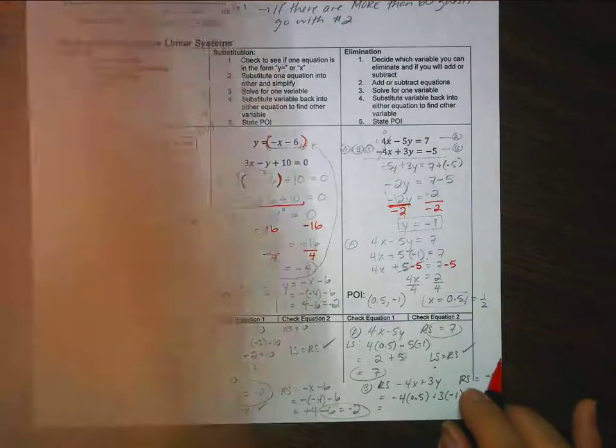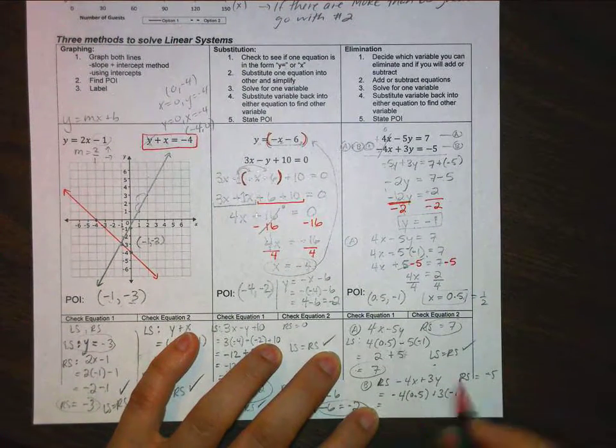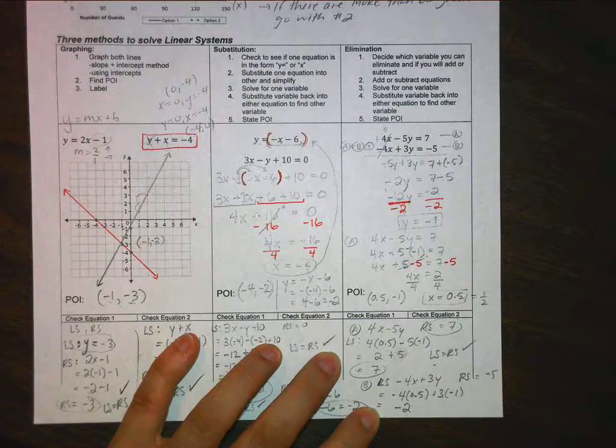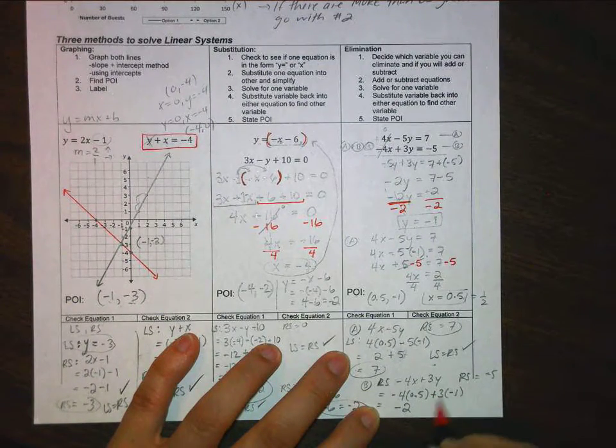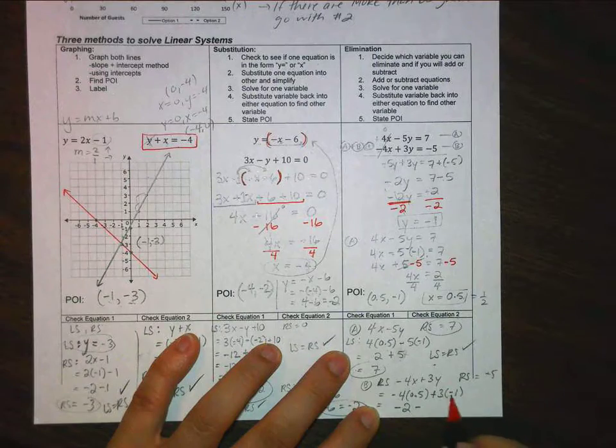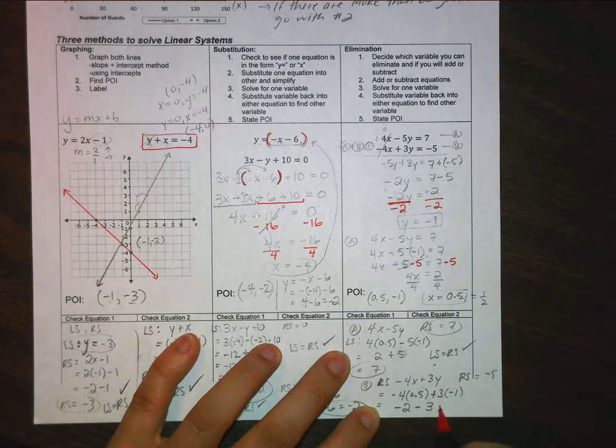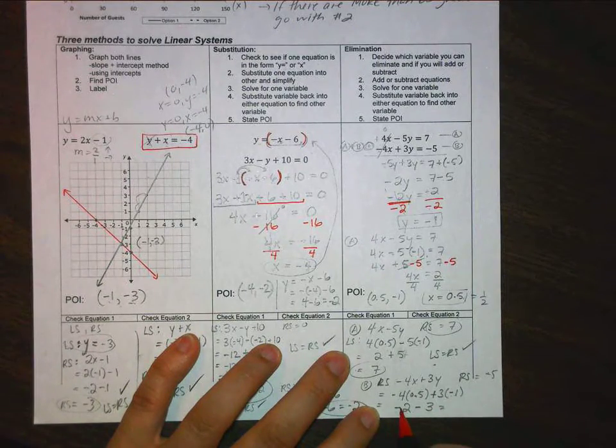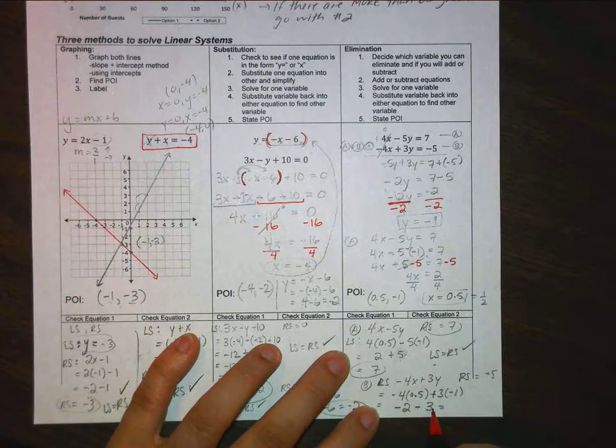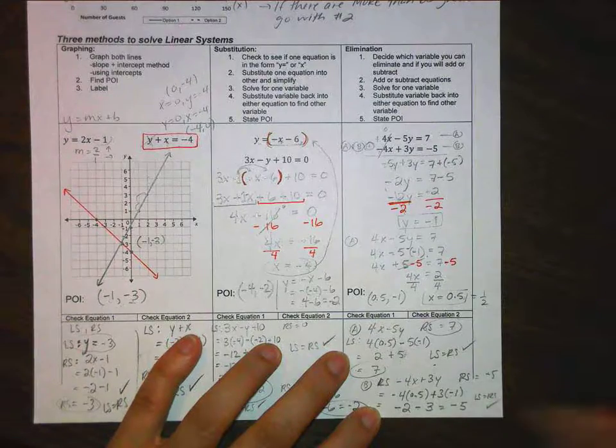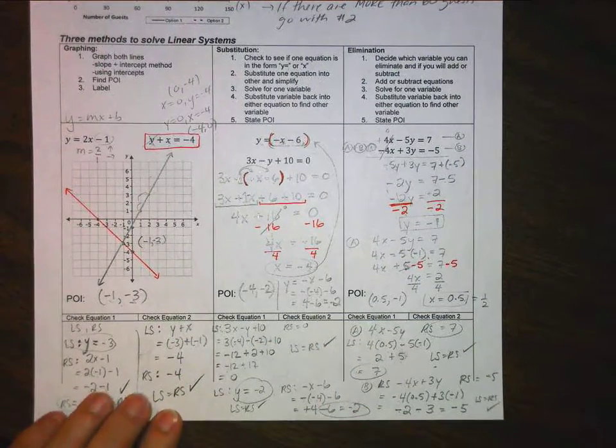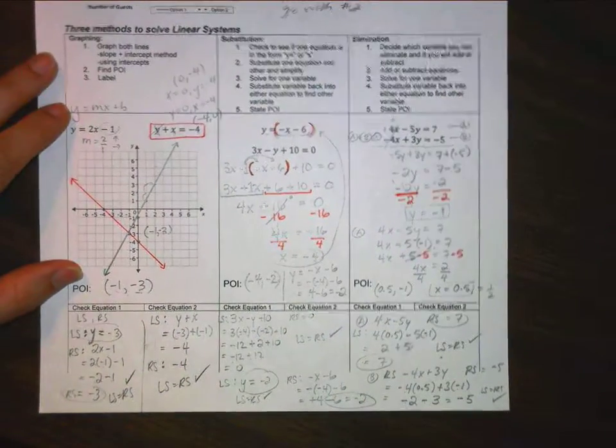So let's see what this ends up being. Negative 4 times a half plus 3 times negative 1. So negative 4 times a half, that gives us negative 2. And a positive times a negative is going to be negative, and 3 times 1 is 3. On your calculator, I have a negative number and I'm subtracting some more negatives. That gives me negative 5. So left side equals right side, check.